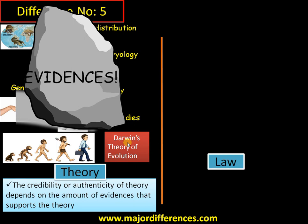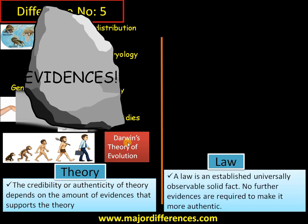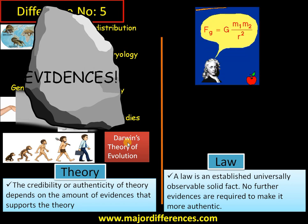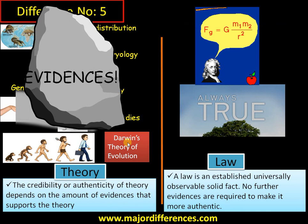In the case of a law, it is an established universal fact. No further evidence is required to make it more authentic. Take Newton's law of gravity — whatever the case, the law of gravity remains the same; no additional data is needed. It is universal and will always be true. So hopefully the differences between theory and law are clear. Thank you so much for your support. You are with maturedifferences.com in association with biologicsums4u.com.